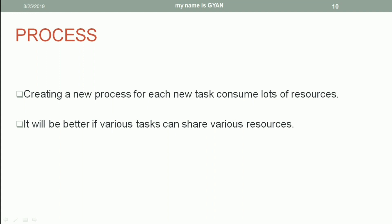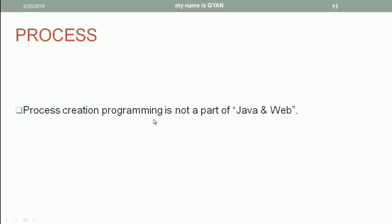Can we create two parallel execution sequences without consuming lots of resources? I do not want to create separate processes, but I want to create separate execution units without consuming the resources that two separate processes would consume. I do not want to consume lots of resources, so I do not want separate processes — but I want separate execution sequences. That can be done by use of multithreading. We will learn about multithreading in the coming videos of this session. Process creation programming is not a part of Java and Web, though from Java 9 onwards Java has an excellent API for process programming. If you want videos on process programming, comment down in the comment section and I will create it separately.